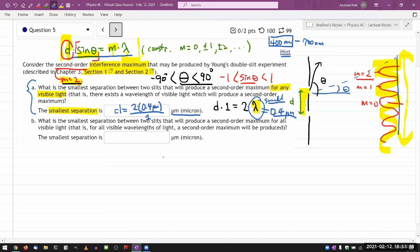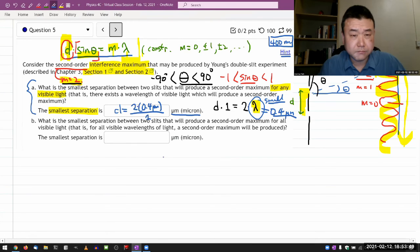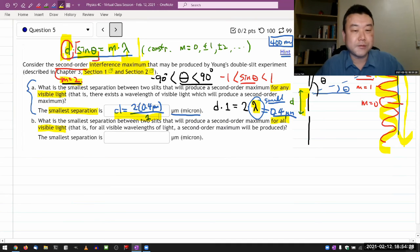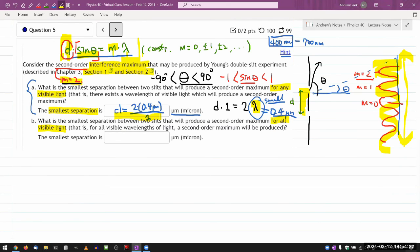The second question asks: what is the smallest separation between two slits that will produce a second order maximum for all visible light? I guess this is more of a reading question than physics question because what you're asked to discern is the difference between the meaning of 'for any visible light' versus the meaning of 'for all visible light'. If you take this separation here, what you'll find is that for red light, you wouldn't see the second order maximum, because it's past the angle where it would have been able to produce that second order maximum.